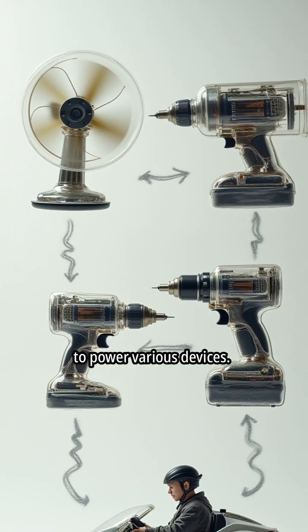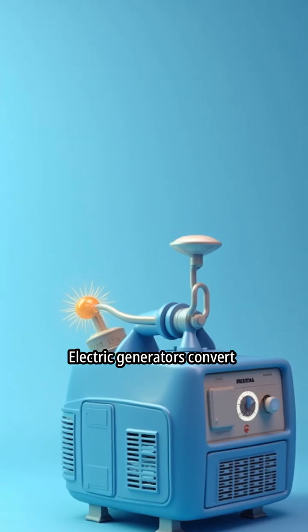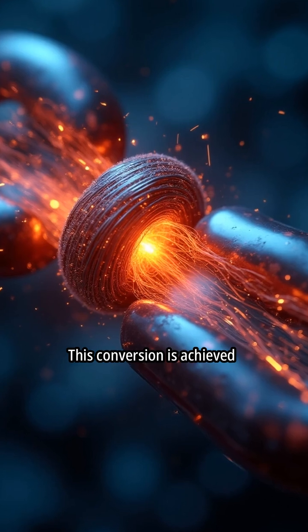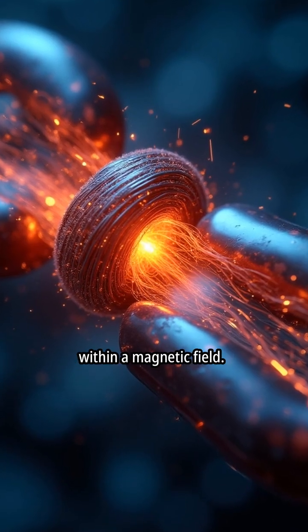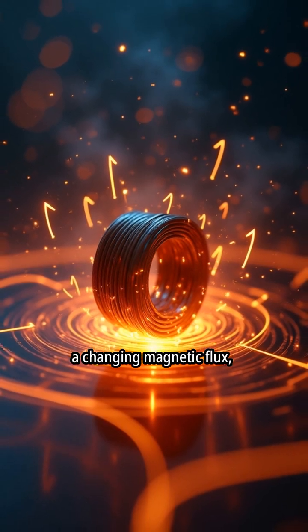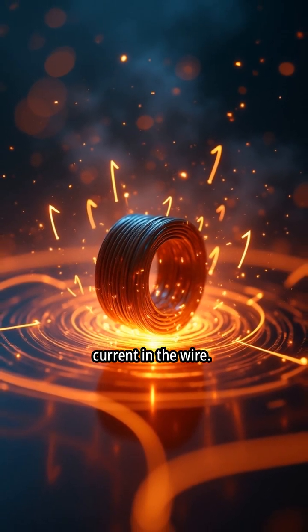This rotation can be harnessed to power various devices. Electric generators convert mechanical energy into electrical energy. This conversion is achieved by rotating a coil of wire within a magnetic field. The rotating coil experiences a changing magnetic flux, which induces an electric current in the wire.